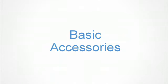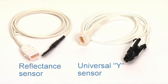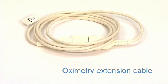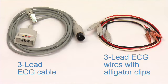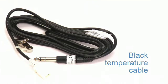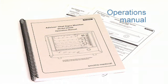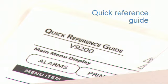The basic accessories included with all models are: an AC power cord that charges the internal battery, reflectance and universal Y-pulse oximetry sensors, an oximetry extension cable, a 3-lead ECG cable and 3-lead ECG wires with alligator clips, an NIBP cuff set, a black temperature cable, a disposable temperature probe, an operations manual, and a quick reference guide.